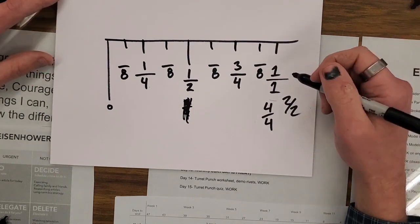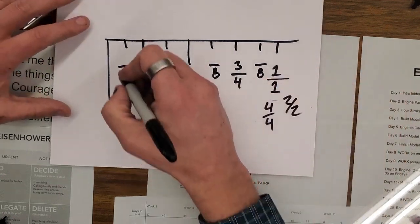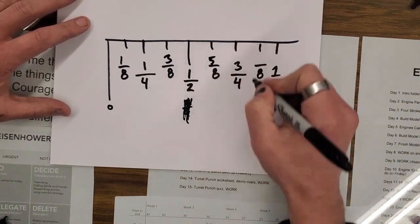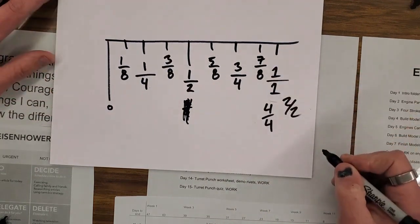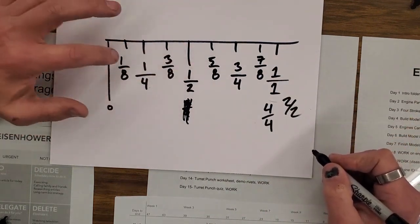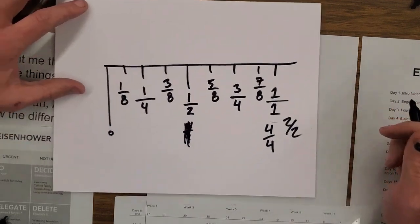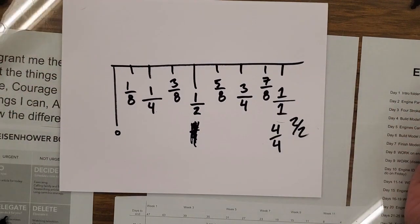So to make it even simpler, numerators are always odds. We always start with one. One, three, five, seven. Odd numbers. One eighths. Three eighths. Five eighths. Seven eighths.